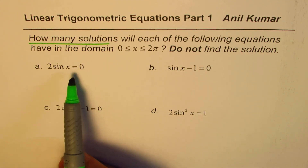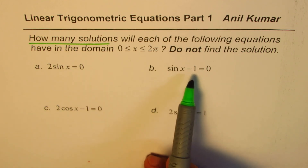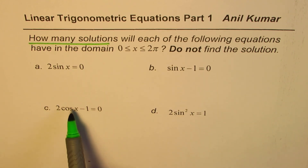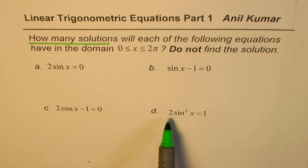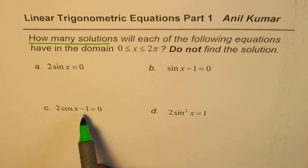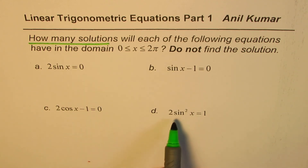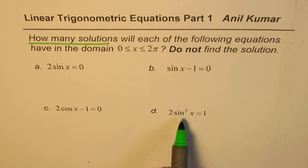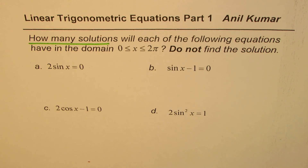The first equation is 2 sin x = 0, then sin x − 1 = 0, then 2 cos x − 1 = 0, and 2 sin²x = 1. The first three are linear equations and the last one is a quadratic equation in trigonometric functions. I've purposely included it so we understand what are linear trigonometric equations and what are not.